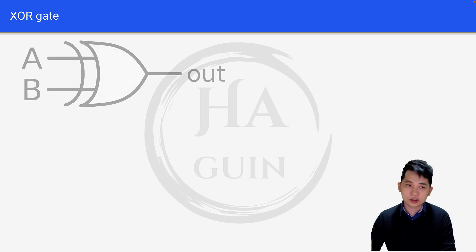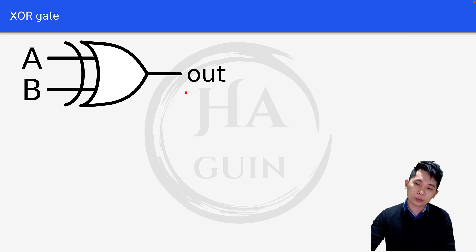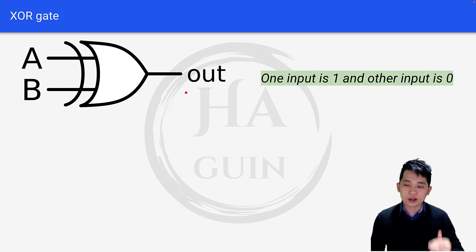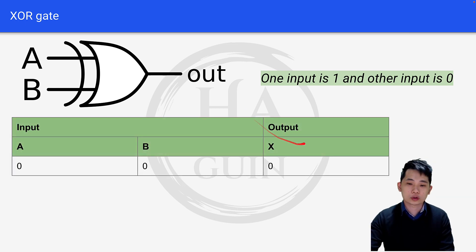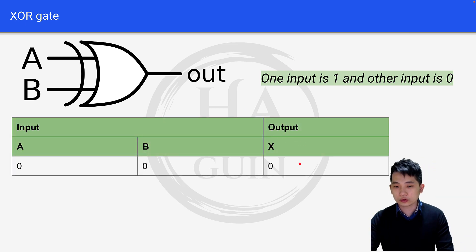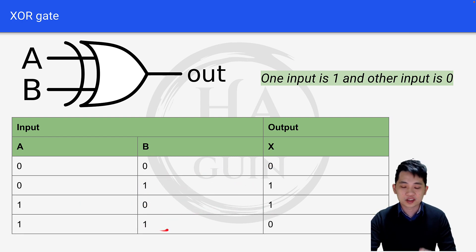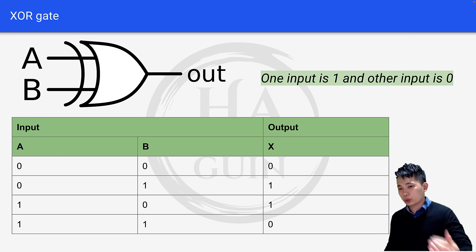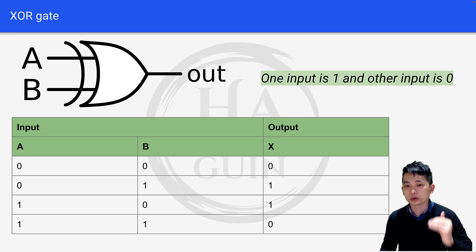Lastly, let's look at XOR gate. This is the symbol of XOR gate with A, B, and OUT. In order for the output to be 1, one input is 1 and the other input is 0. Looking at the table: 0, 0 is equal to 0 since either of the inputs is 0. Then 0, 1 is equal to 1. Then 1, 0 is equal to 1. And 1, 1 is actually equal to 0. So one input must be 1 and the other must be 0 to get output equal to 1.